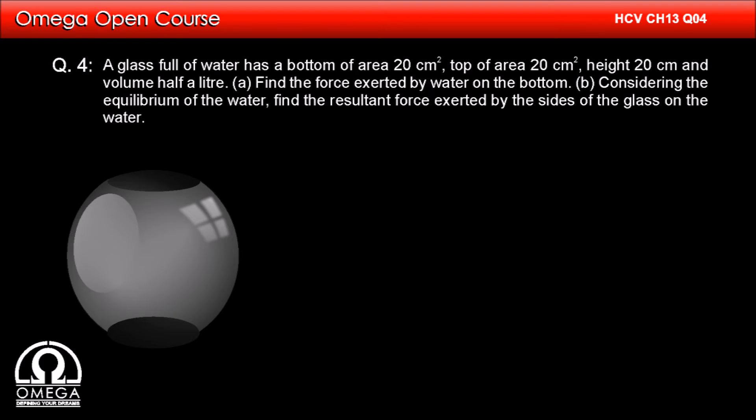Now let us look at the free body diagram of the water in the glass. Atmospheric pressure is pushing the water downwards with force P₀ × A that is 10⁵ × 20 × 10⁻⁴ that is 200 Newton. As we have calculated in the last part,